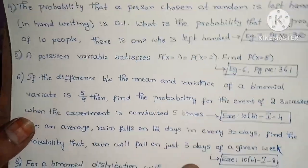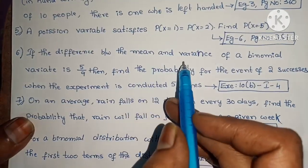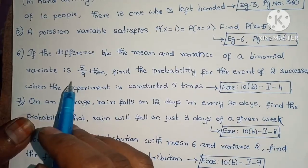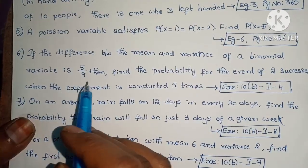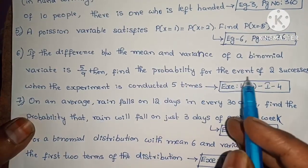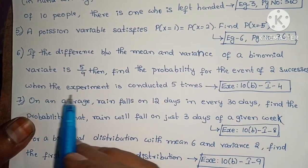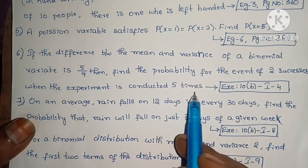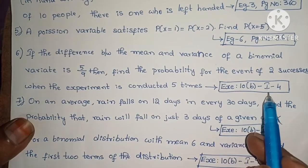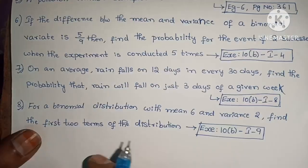If the difference between the mean and variance of a Binomial variety is 5/9, then find the probability for the event of 2 successes when the experiment is conducted 5 times. Exercise 10, Section I, problem 4.